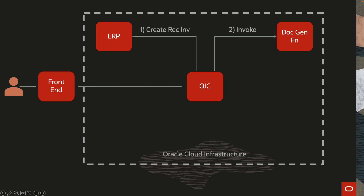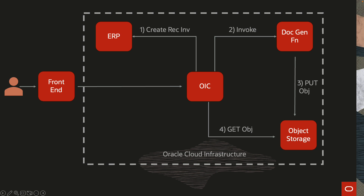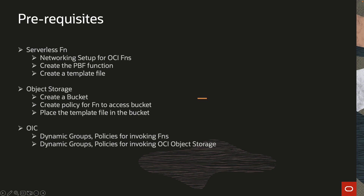We will use the document generator function. In the same flow, once you get the payload back from the created ERP invoice, we will invoke a document generator function — this is a pre-built function. What it does is generate the document and put it in object storage. The next step in your integration flow is to get that particular generated file. There is an optional step to delete or archive it, but in this demo, after getting the file I'm simply emailing it back to the end user who submitted the order.